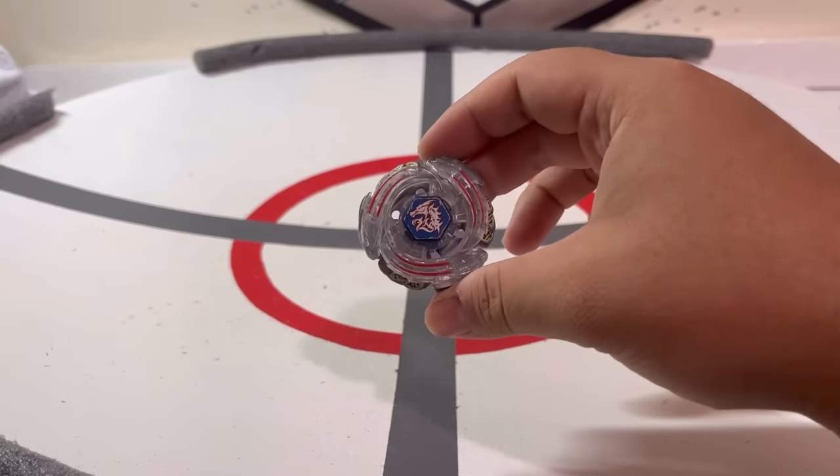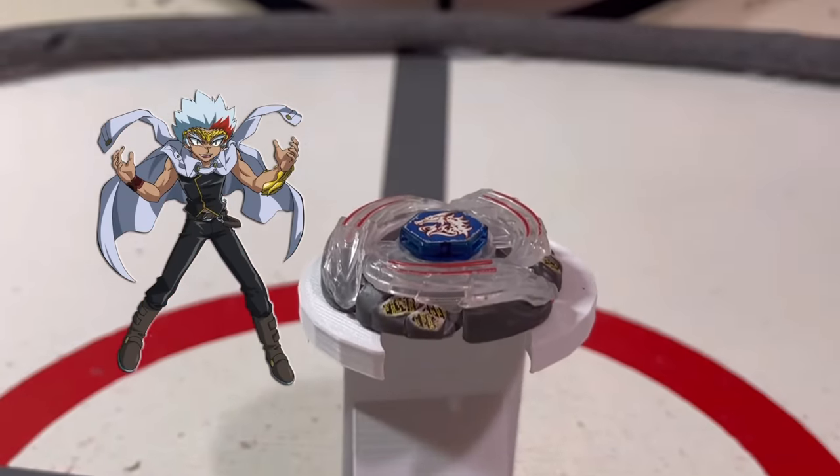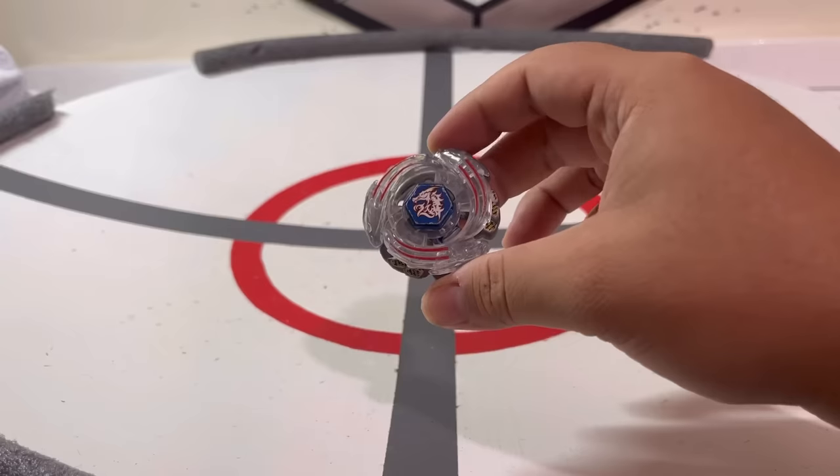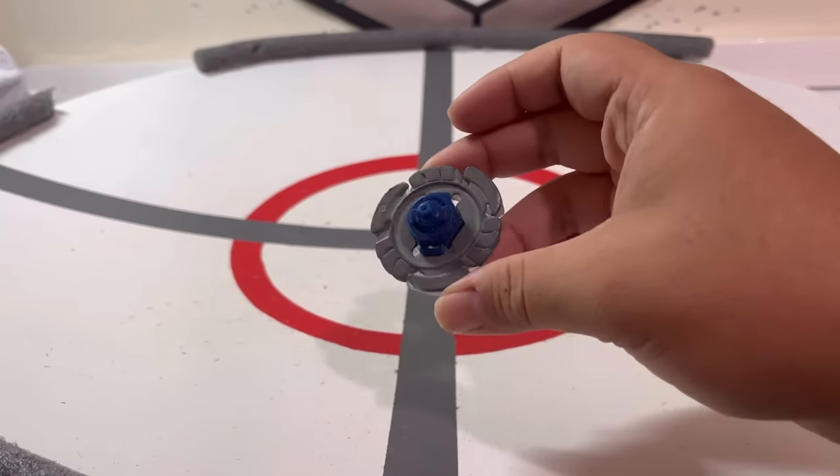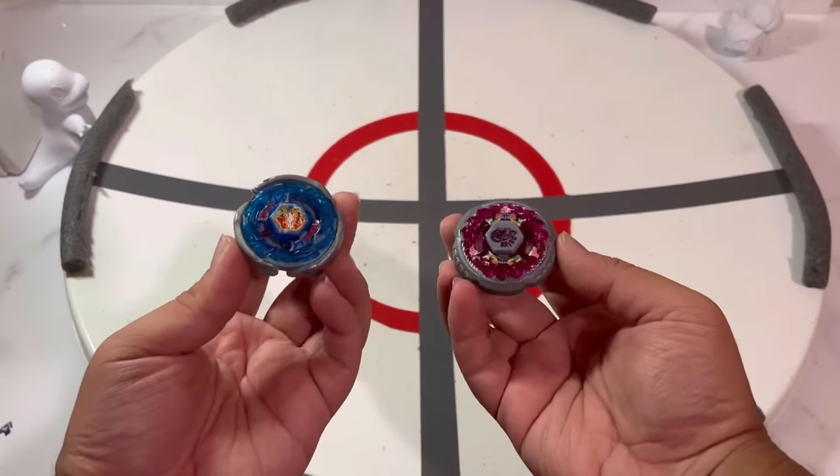And our last stage will be against Lightning Eldrago, a left-spinning attack type Beyblade owned by Ryuga in the anime. Ryuga was one of the main consistent antagonists in the anime, utilizing one of the few left-spinning Beyblades. It's going to be pretty fun seeing two attack type Beyblades clashing in the stadium. Alright, now let's start getting onto these battles.